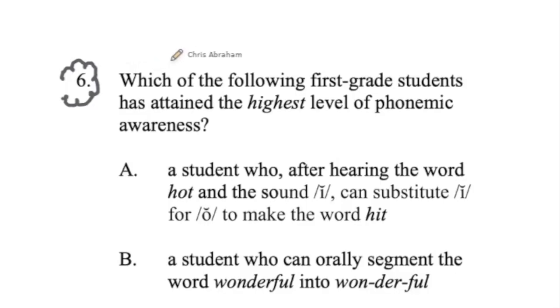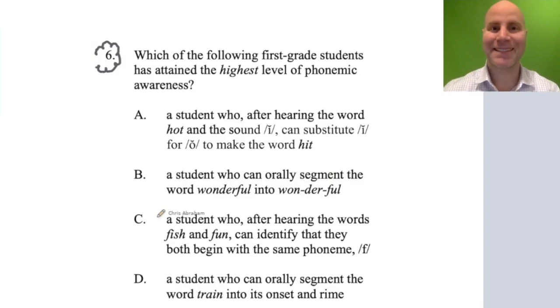Number six: Which of the following first-grade students has attained the highest level of phonemic awareness? A: a student who, after hearing the word hot and the sound /i/, can substitute /i/ for /o/ to make the word hit. B: a student who can orally segment the word wonderful into won-der-ful. C: a student who, after hearing the words fish and fun, can identify that they both begin with the same phoneme. D: a student who can orally segment the word train into its onset and rime.